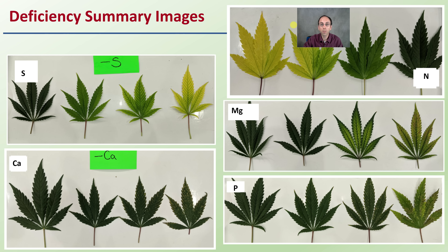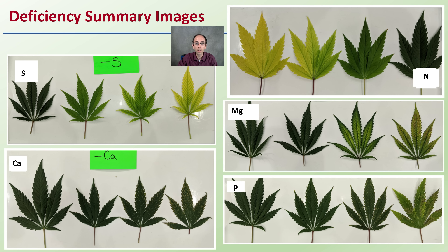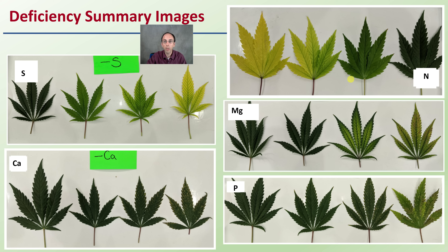As a final summary, refer to this general deficiency symptoms guide comparing sulfur, calcium, nitrogen, magnesium, and phosphorus to best match what you're seeing. Keep in mind calcium and phosphorus deficiencies can look very similar — I tend to see more calcium deficiencies than phosphorus. Use this guide to visually diagnose your plants, get suggestions for fertilization, reduce symptoms, and prevent issues in the future.